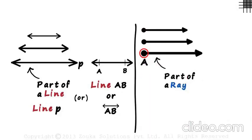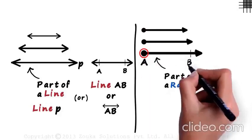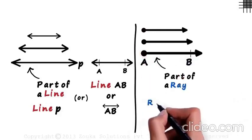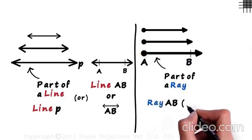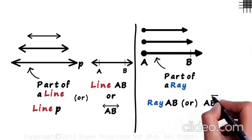We can mark this point as A and mark a point B somewhere on the ray. We can call this ray AB or write AB with a tiny ray over it. This tells us that the ray starts at point A and goes indefinitely in one direction.